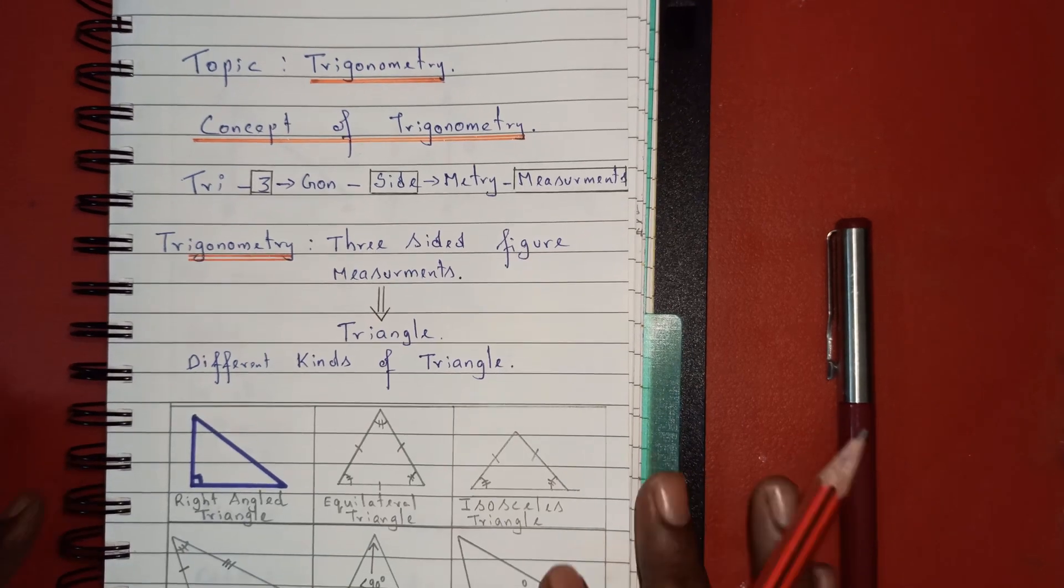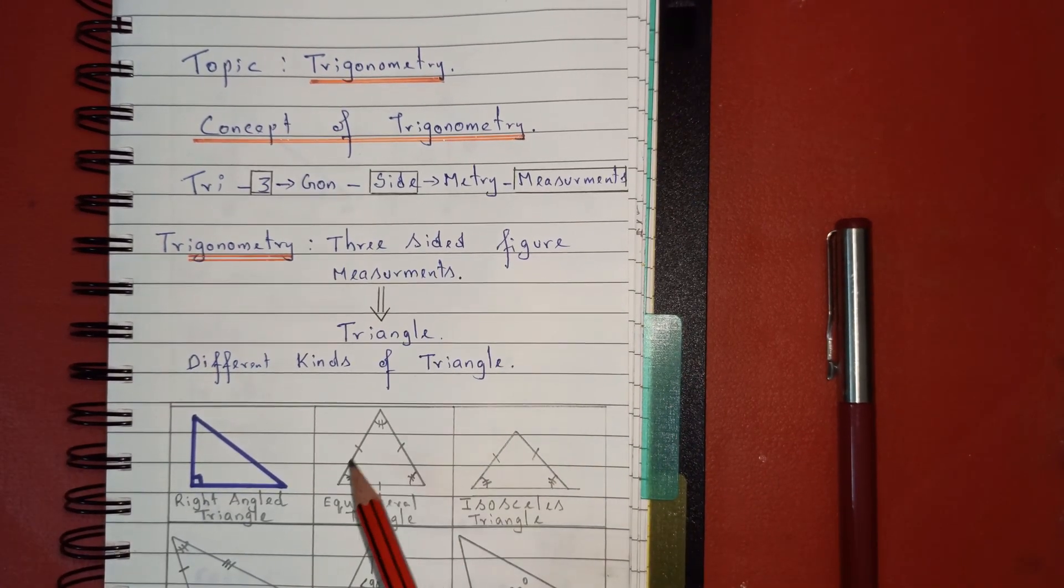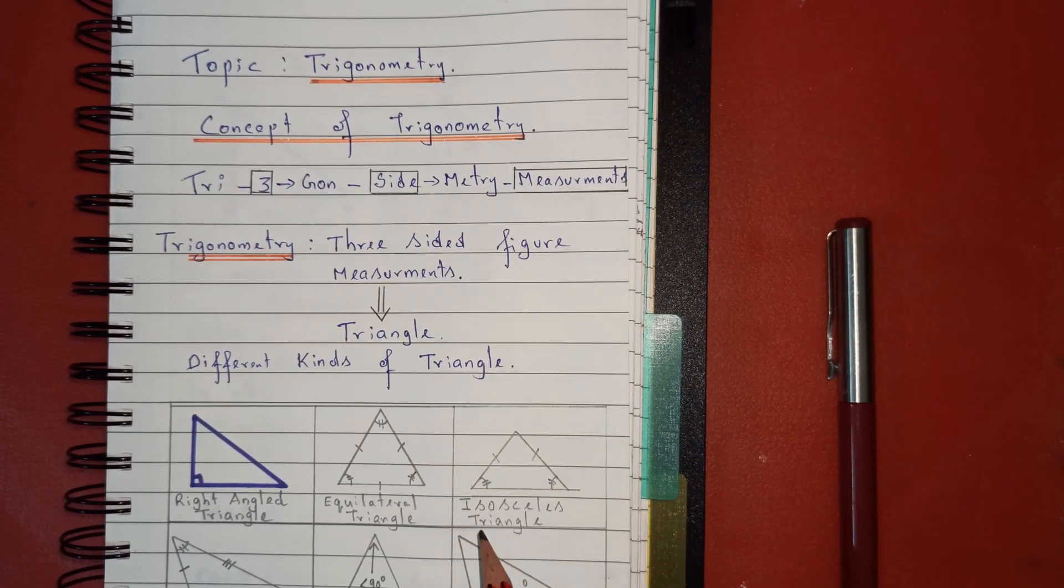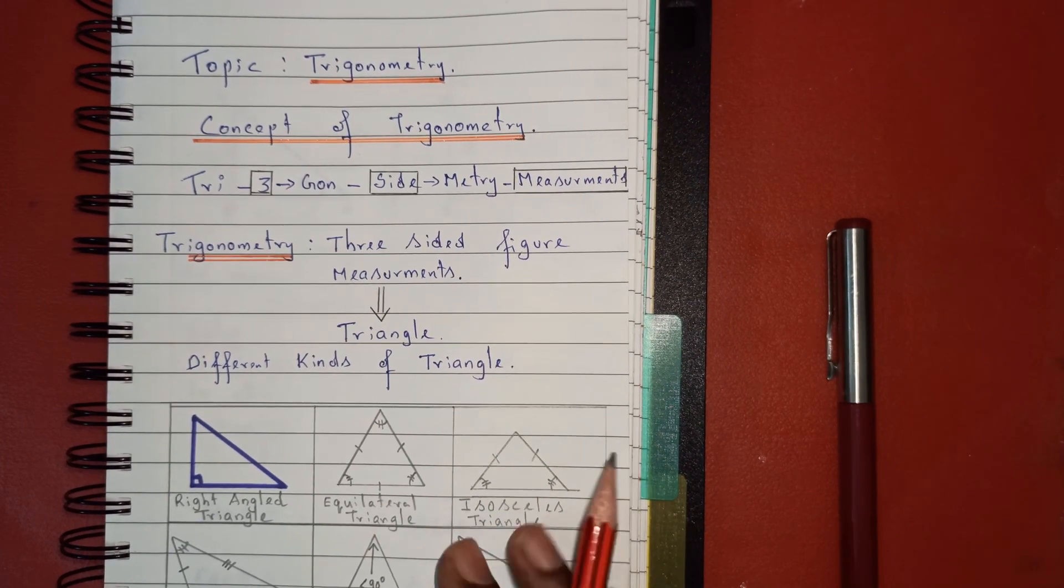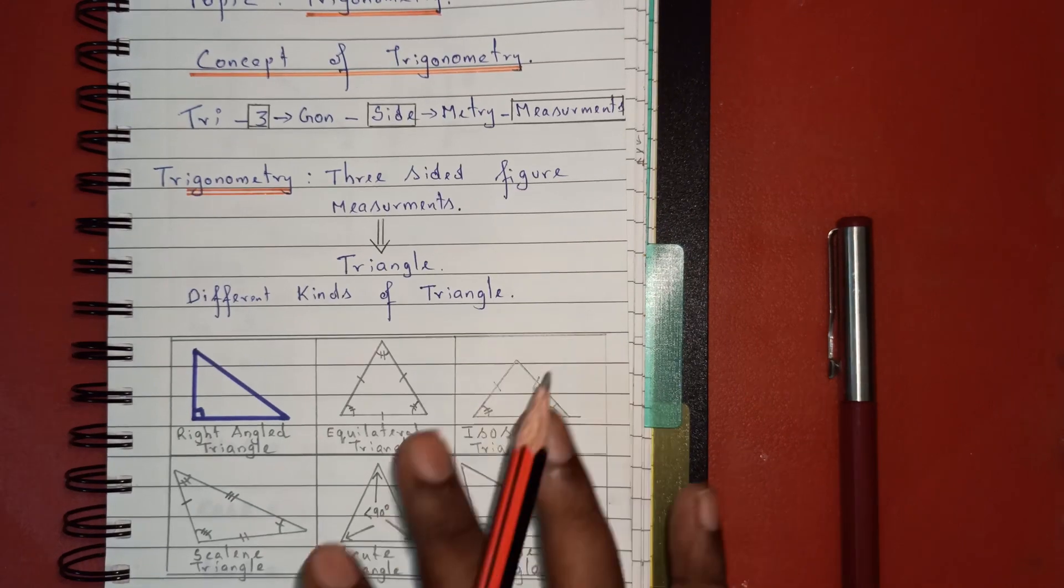The next one is an equilateral triangle where all sides and angles are equal. Then there's an isosceles triangle where two sides are equal.